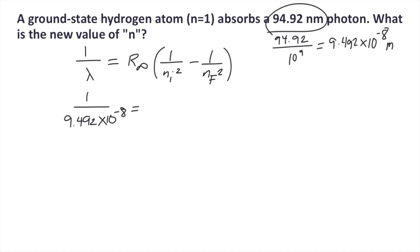Then we have R infinity, the Rydberg constant. This value is something you should memorize or have already known. The value is 10973731.57. Times 1 over n initial squared. The initial value of n is 1, so 1 squared minus 1 over nf squared, which we don't know yet.